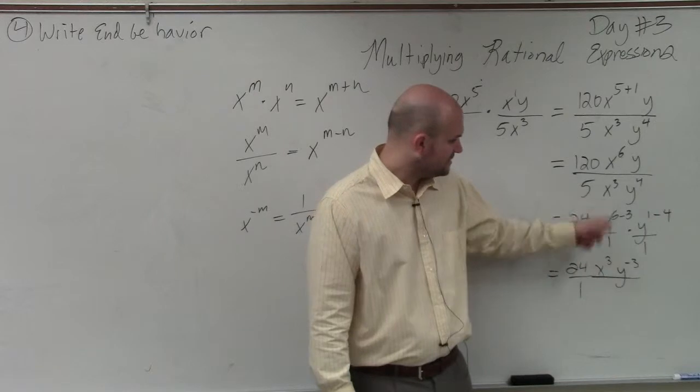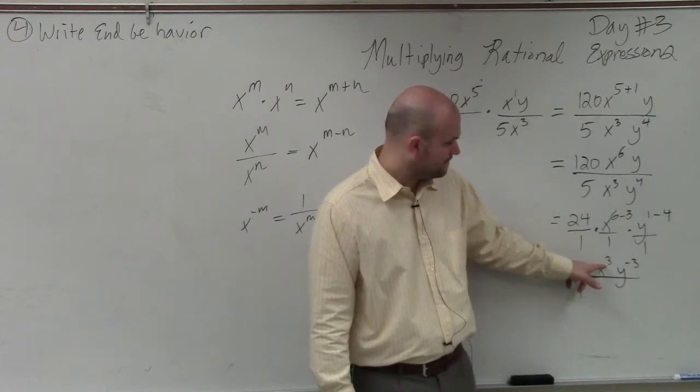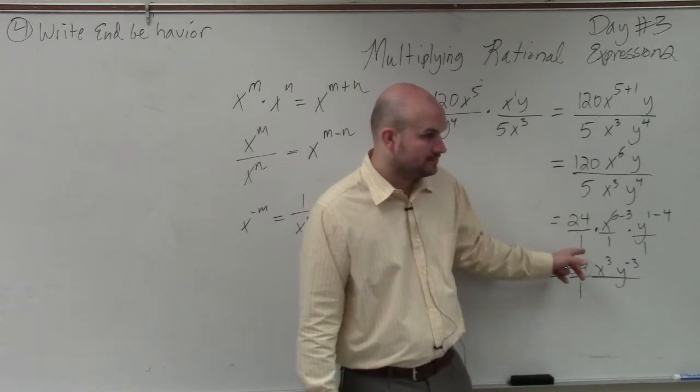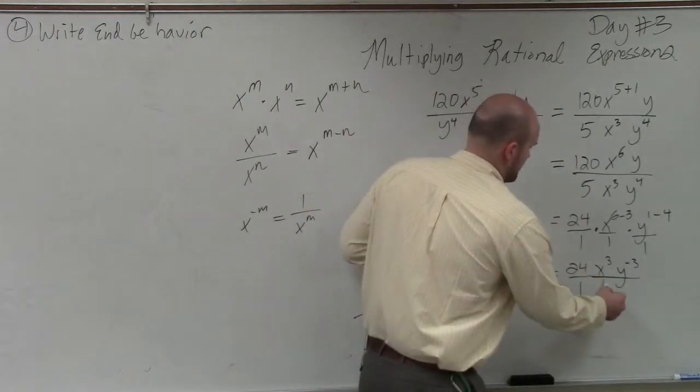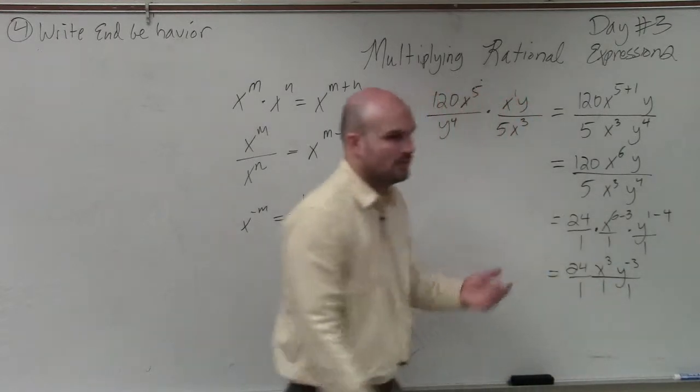Yeah, I just simplified. x to the sixth minus 3 is x to the third. So you get 120 divided by 5. Right, which is 24 over 1. Ah, true. OK? You can really write ones right here.